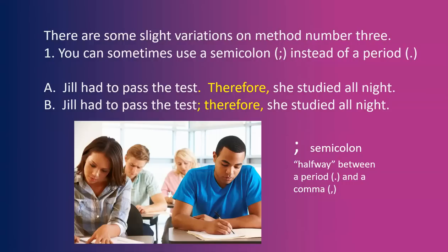There are some slight variations on method number three. First, you can sometimes use a semicolon instead of a period. For example: A. "Jill had to pass the test. Therefore, she studied all night." — two separate sentences using a reconnecting word. B. "Jill had to pass the test; therefore, she studied all night." A semicolon is halfway between a period and a comma, enabling you to reconnect ideas without starting a brand new sentence.